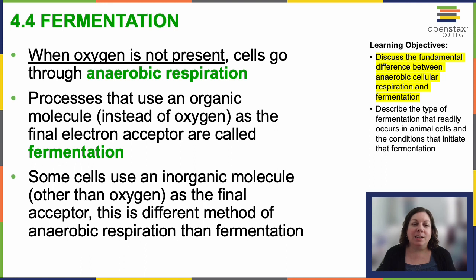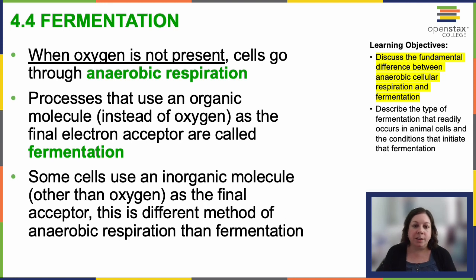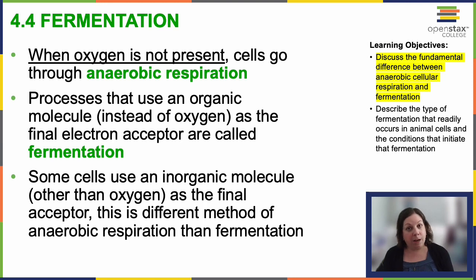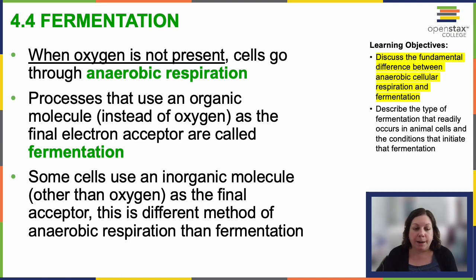In aerobic respiration, oxygen served as the final electron acceptor. This allowed ATP production using high-energy electrons carried by NADH and FADH2 through the electron transport chain. However, when aerobic respiration isn't possible, NADH needs to be re-oxidized to NAD+ for glycolysis to continue. So we have alternate methods that have to come into play.